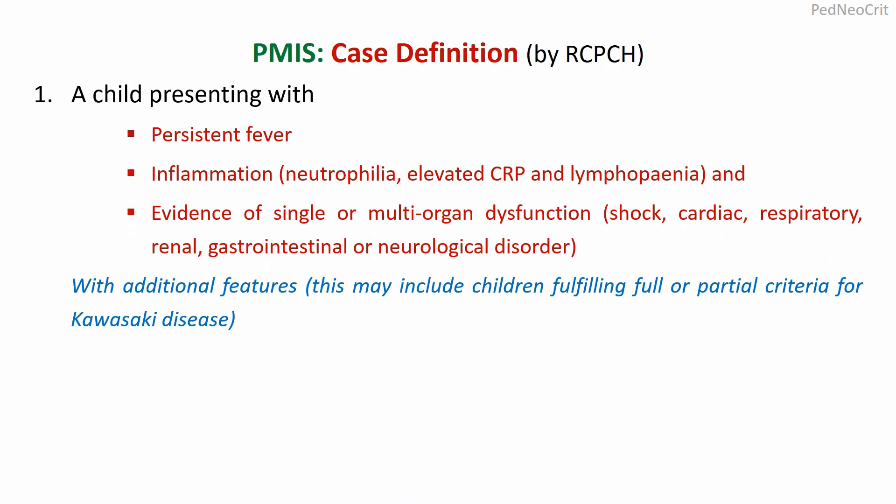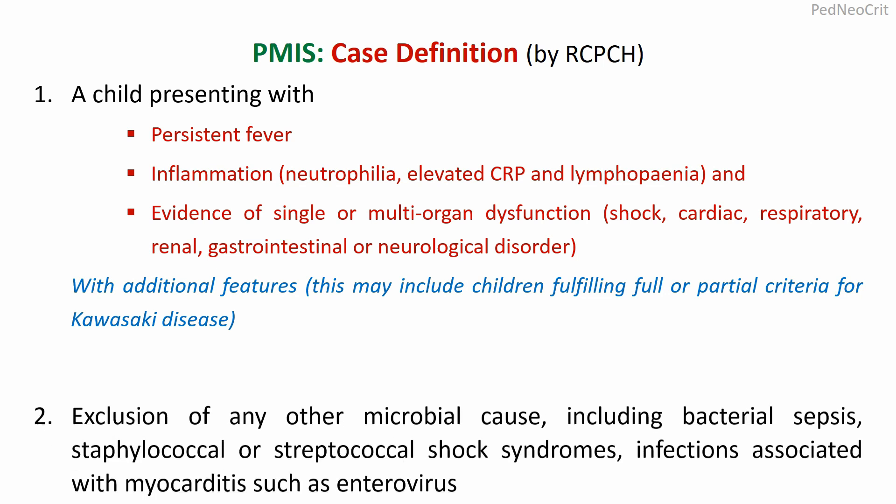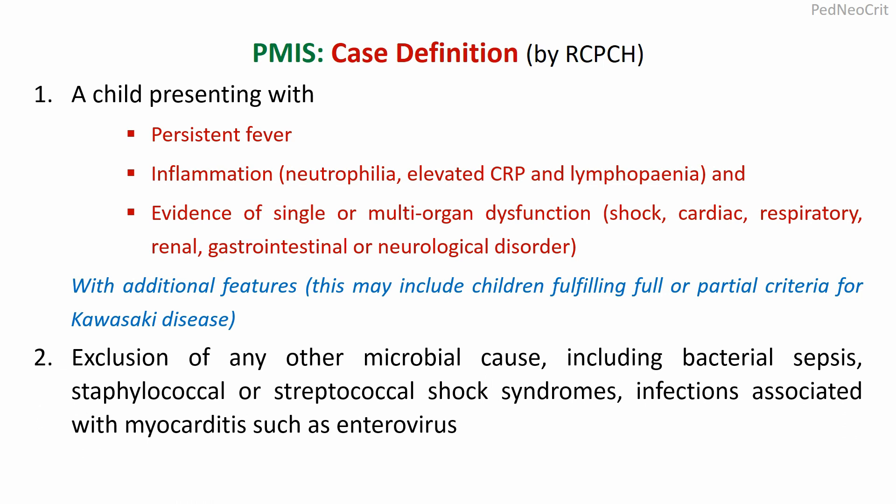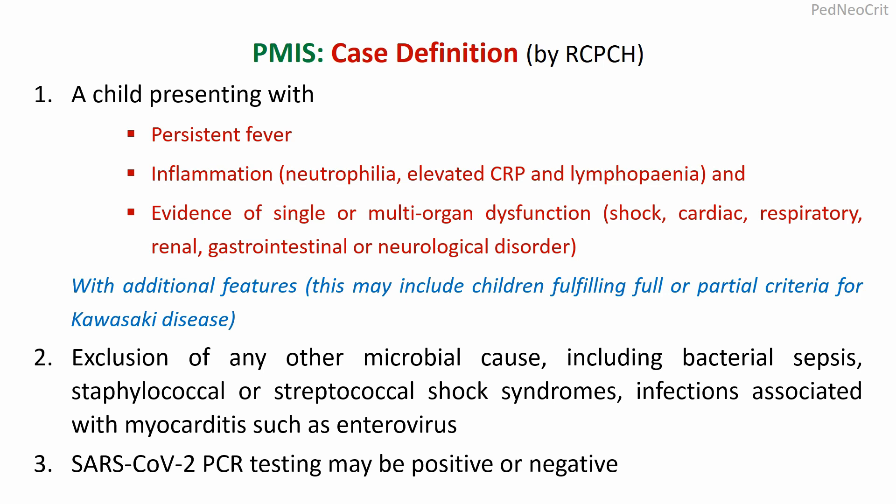The RCPCH case definition requires: a child presenting with persistent fever, inflammation with neutrophilia, elevated CRP and lymphopenia, and evidence of single or multiple organ dysfunction such as shock, cardiac, respiratory, renal, gastrointestinal, or neurologic disorder — with additional features which may include children fulfilling full or partial criteria of Kawasaki disease. Exclusion of any other microbial cause including bacterial sepsis, staphylococcal or streptococcal toxic shock syndrome, and infections associated with myocarditis such as enterovirus. SARS-CoV-2 PCR testing may be positive or negative.